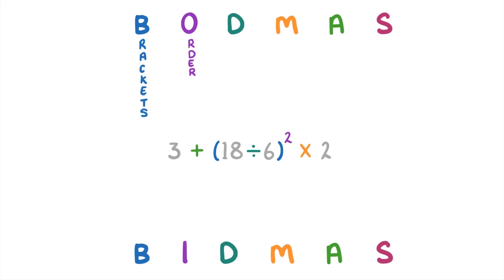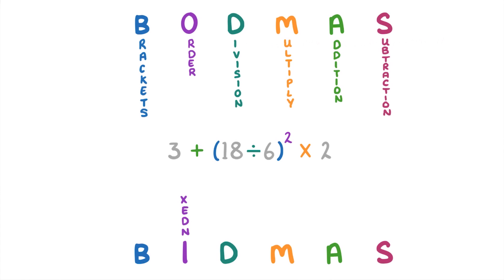First we should always look at the brackets. Then we should look at the order or index, which is the little raised number when you square or cube something — often called the power. Then any division, multiplication, addition, and finally subtraction.